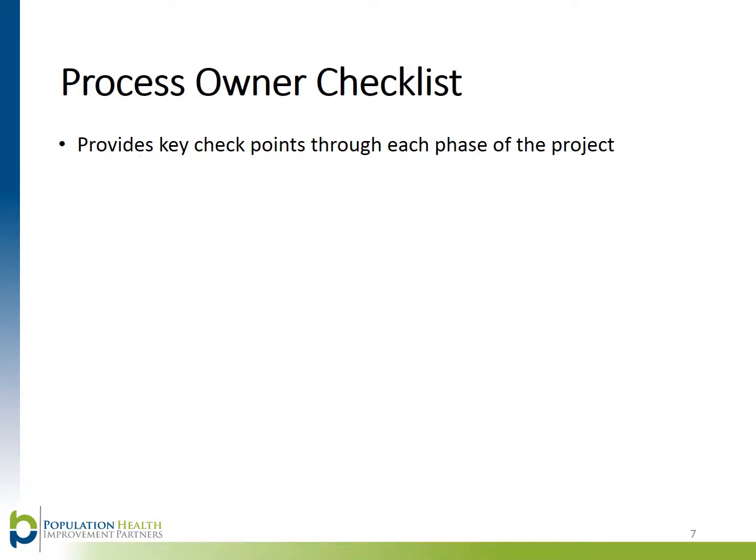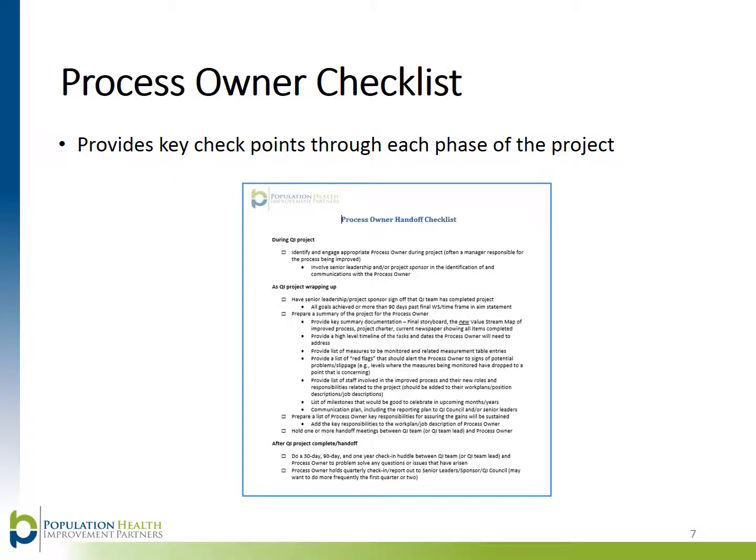Here is a great tool called the Process Owner Checklist. This tool walks the process owner through each phase of a project and provides checkpoints of things to keep in mind and action items to promote sustainability. For example, once your project is completed, there is a checkpoint or reminder to have quarterly report out or check-in sessions with your senior leader, sponsor, and or QI counsel.